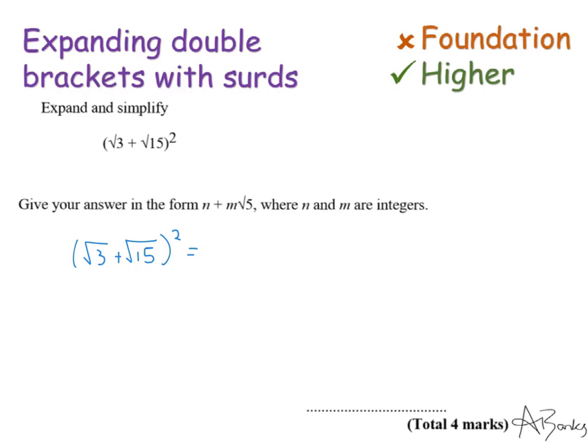Squaring something means times it by itself. So this means we are going to times all of this by itself. It actually means writing it as a double bracket with the same thing in each bracket. So this is what I have to calculate.